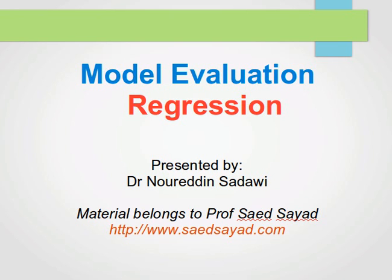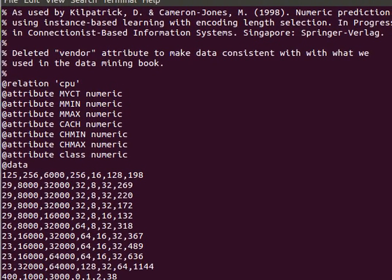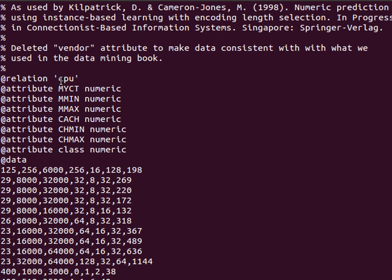Welcome to this model evaluation tutorial. In this video I'll be covering the most common ways to evaluate regression models. The idea of regression is to predict a real value — not a class or nominal value, but a real number. Attributes are also called features, predictors, characteristics, or descriptors — it depends, but they all mean the same thing.